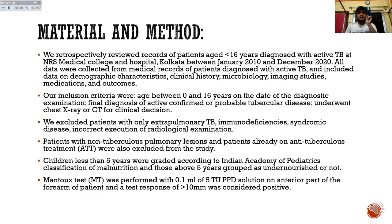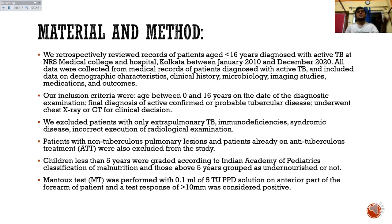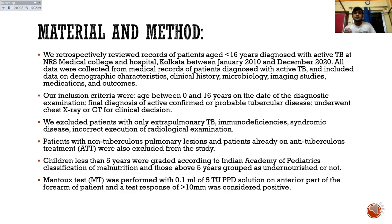For methodology, we evaluated reports from January 2010 to December 2020 for patients less than 16 years diagnosed with active TB in our hospital. We recorded demography, clinical and microbiological imaging features, and medication outcomes. Inclusion criteria: patients less than 16 years with a final diagnosis of confirmed or probable tuberculosis. Exclusion criteria: patients with only extra-pulmonary TB, immunodeficiency, non-tubercular pulmonary conditions, or those already on anti-tuberculosis treatment.